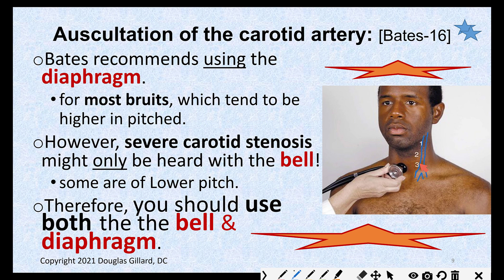When auscultating, place the bell at each location — upper, middle, and lower along the carotid — for about three seconds each: 1001, 1002, 1003, listening for the whoosh-whoosh-whoosh of a bruit. You can go in either direction along the vessel.